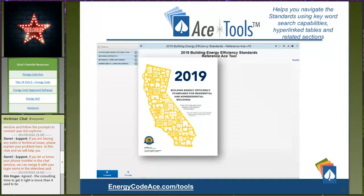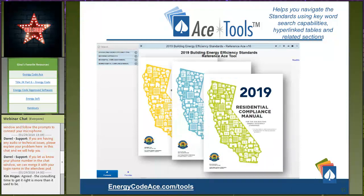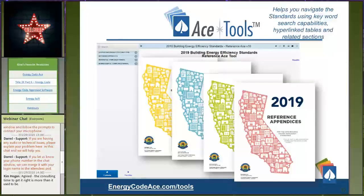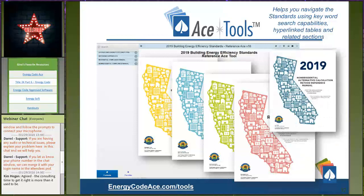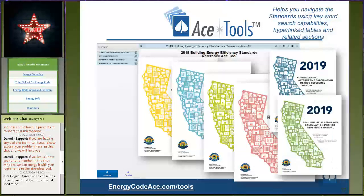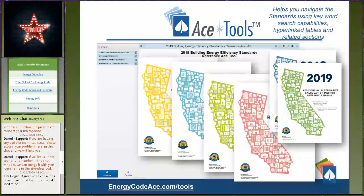Reference ACE is a tool available through Energy Code Ace — available as a bookmark and as an app on your phone, used about 20 times a day. It's the electronic version of the standards: both the residential and non-residential manuals, plus the Reference Appendices Manual, which is extremely important for understanding PV and battery install requirements. We have two new chapters: JA11 regarding PV, which was fleshed out from 2016, and brand new JA12 regarding battery install requirements in the field.